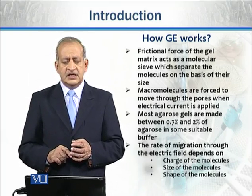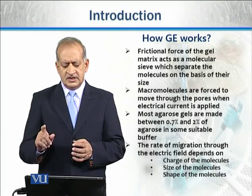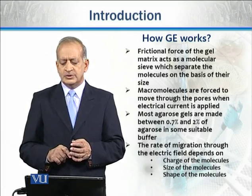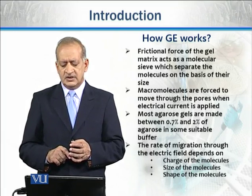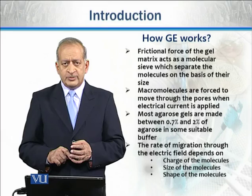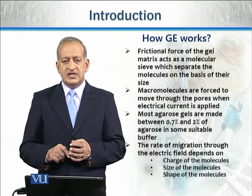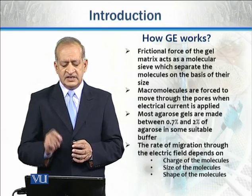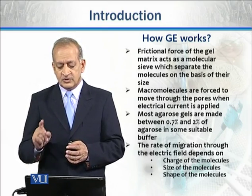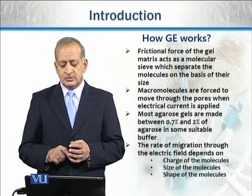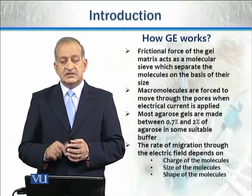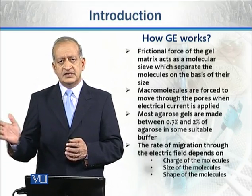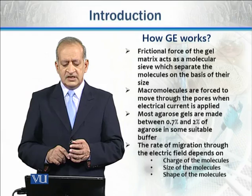Most agarose gels used range between 0.7% to 2% agarose in a suitable buffer. The rate of migration — that is, the rate of separation of macromolecules through the gel when electric current is applied — depends on: 1. The charge present on the molecules, and 2. The size of the molecules. Generally, smaller molecules move faster than bigger molecules.